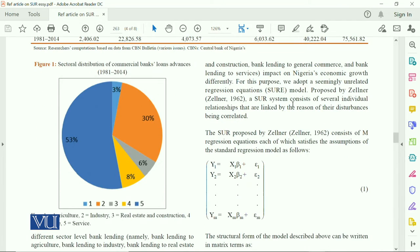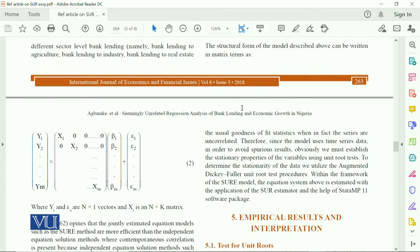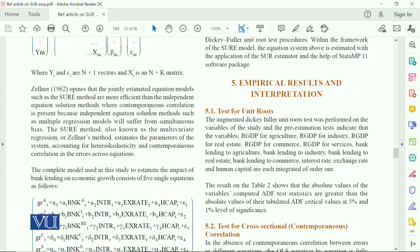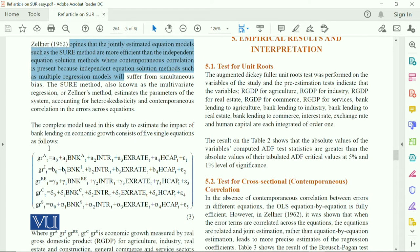Then they have discussed about the SORB model, which is proposed by Zollner in 1962, which I have already discussed with you. And as far as the model is concerned, here it is said that Zollner opinion that the gently estimated equation models such as SORB methods are more efficient than the independent equation.